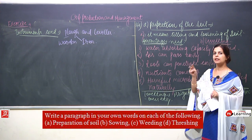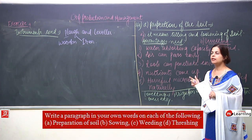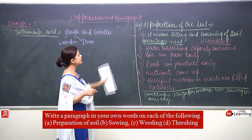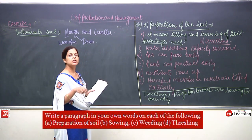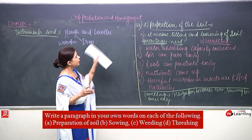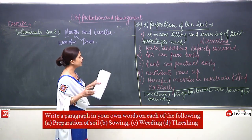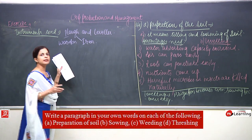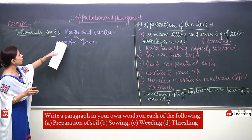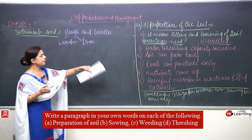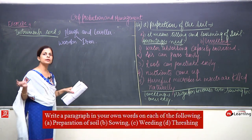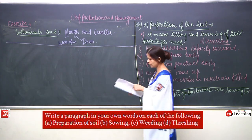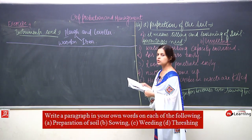To summarise: preparation of soil has two steps — tilling and levelling. Tilling means loosening the soil by turning it up and down. Levelling brings the soil to one level. For levelling, irrigation becomes even and sowing becomes easy. Instruments used: plough for tilling and leveller for levelling.